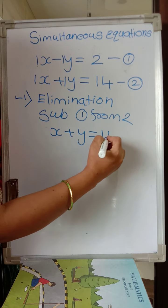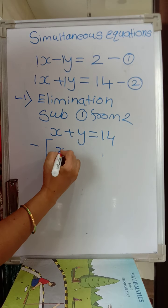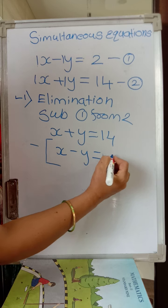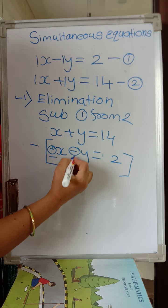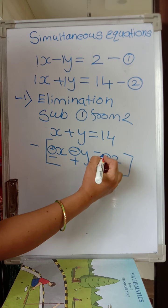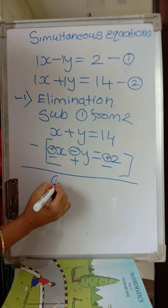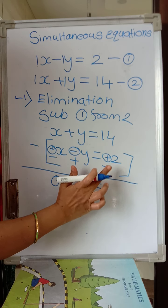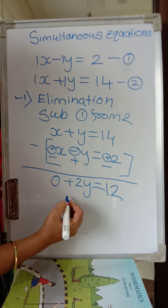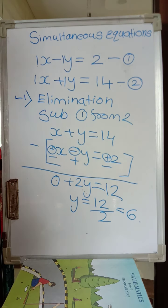Subtract equation 1 from equation 2 — that means equation 2 minus equation 1. Equation 2 is x plus y equals 14. Be careful with the minus sign because signs are going to change. Equation 1 is x minus y equals 2; when we subtract, the plus sign changes to minus, the minus sign changes to plus, and the 2 changes to minus 2. Then x minus x is 0, and y plus y is 2y, equals 14 minus 2, which is 12. So 2y equals 12, giving y equals 6.